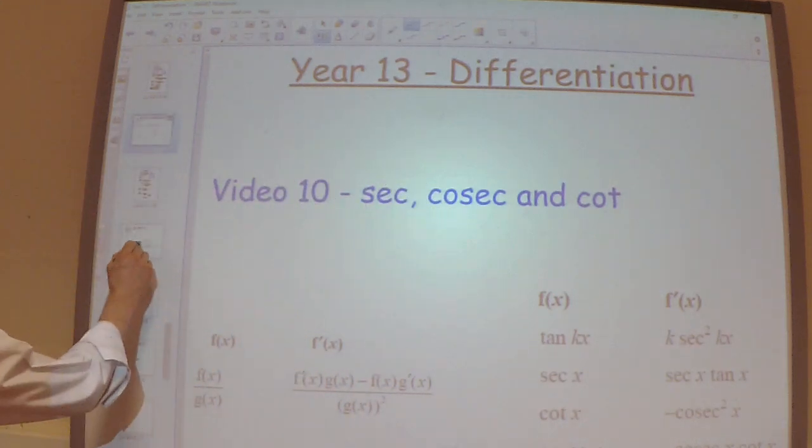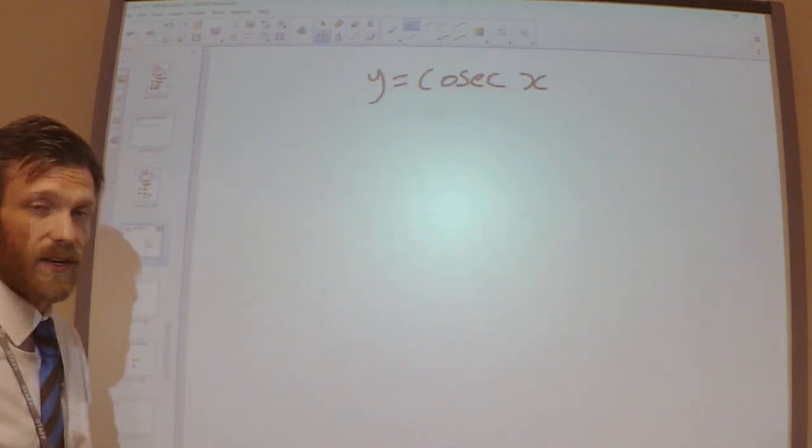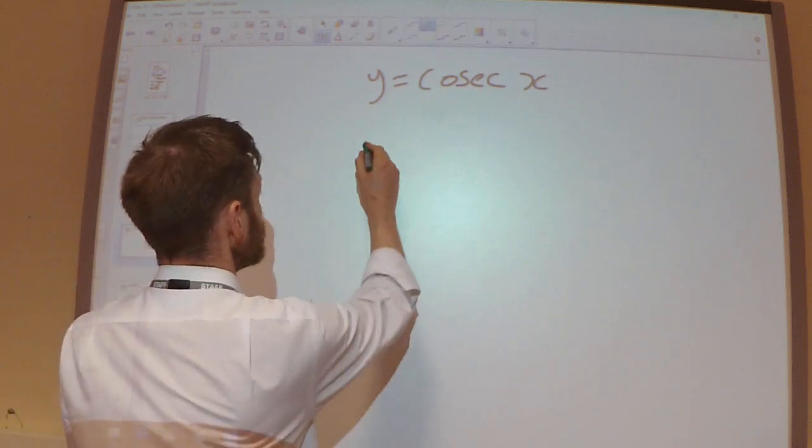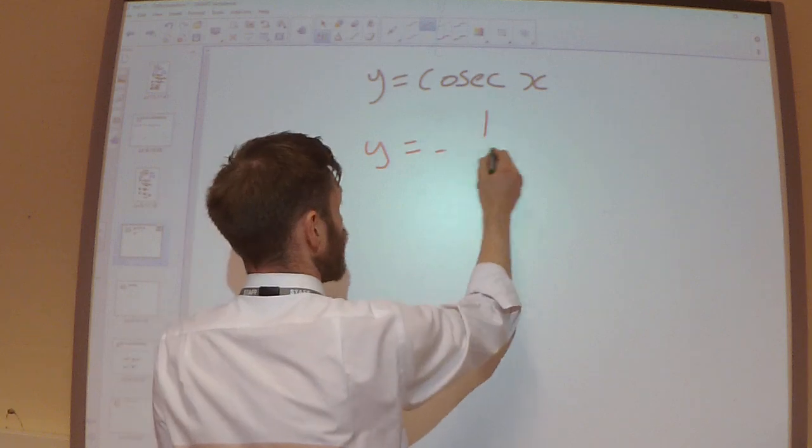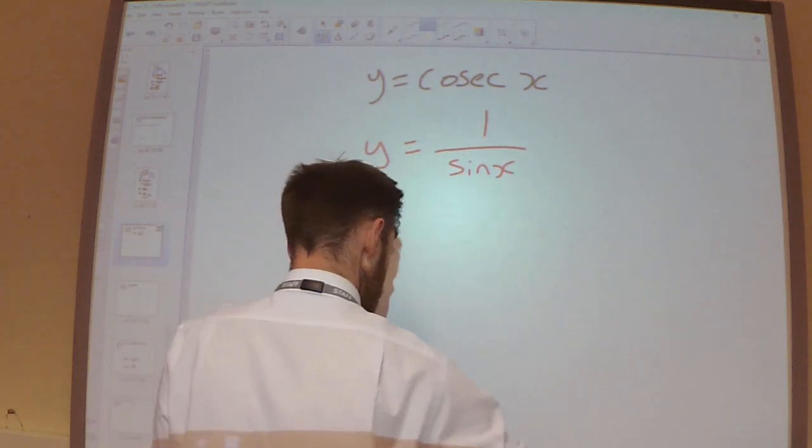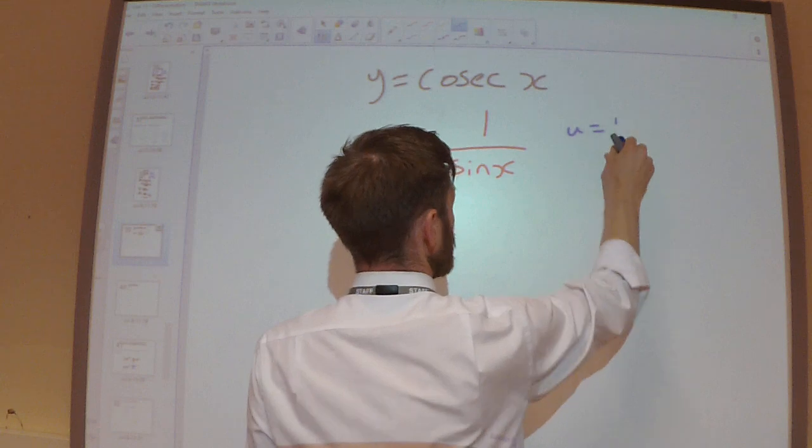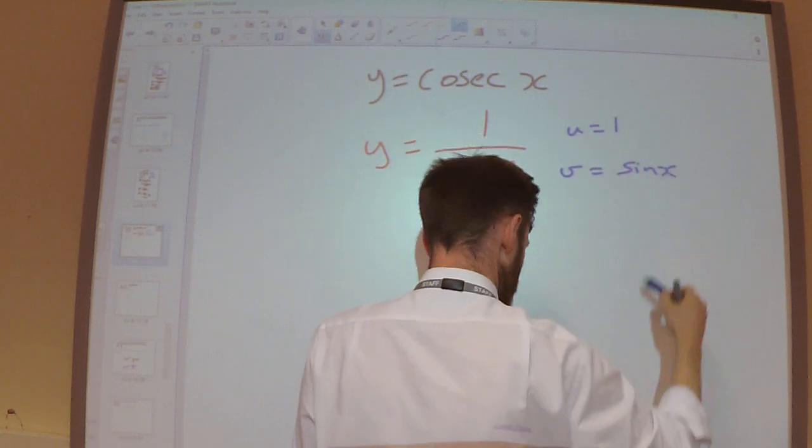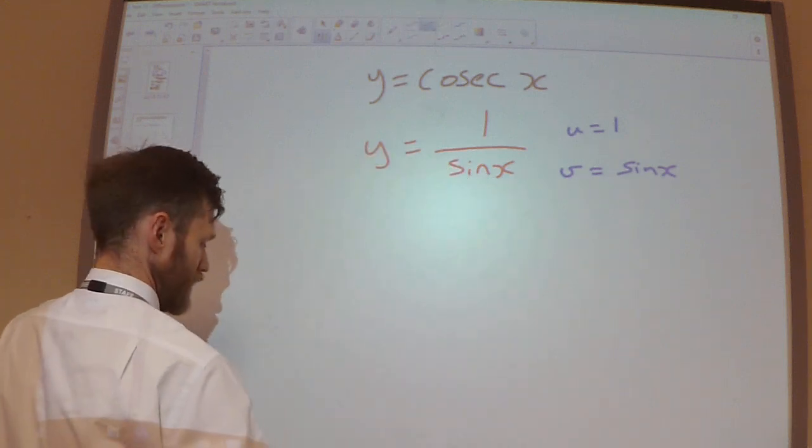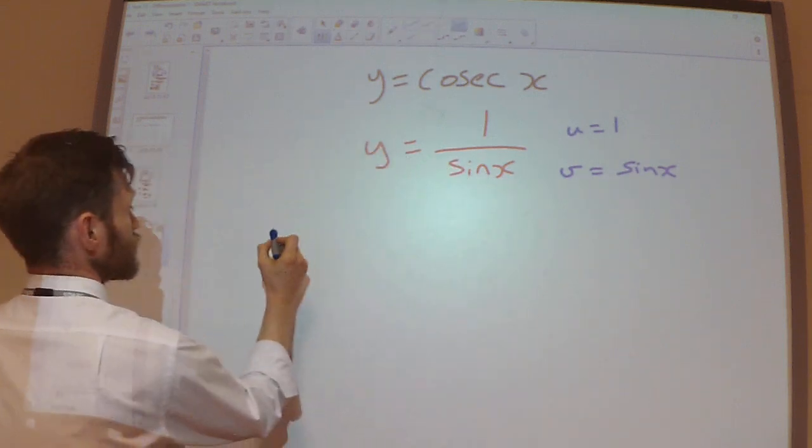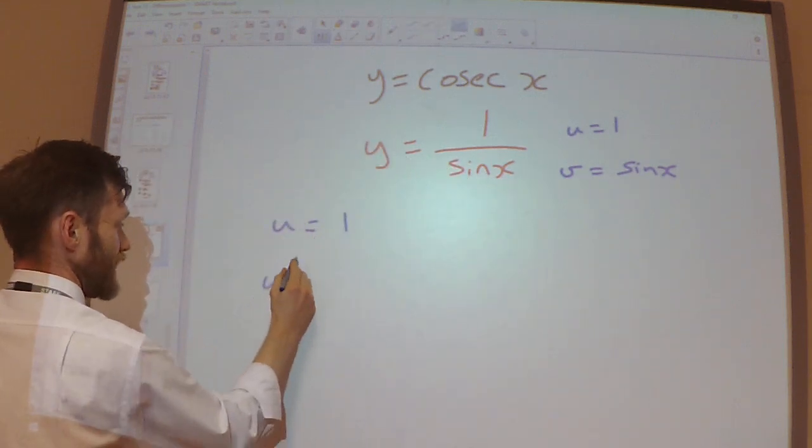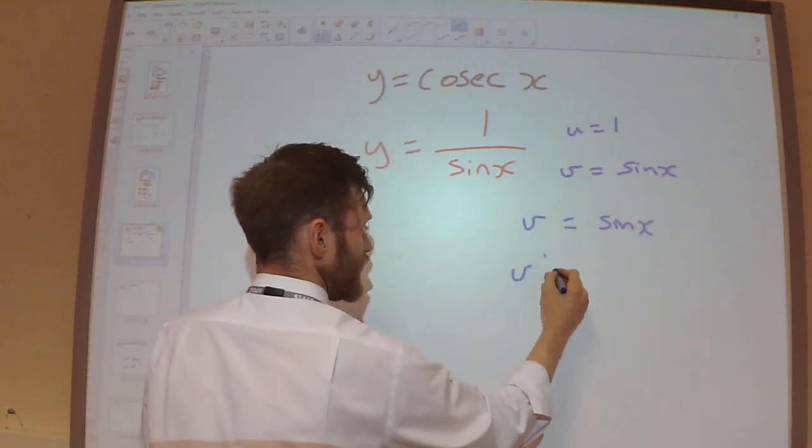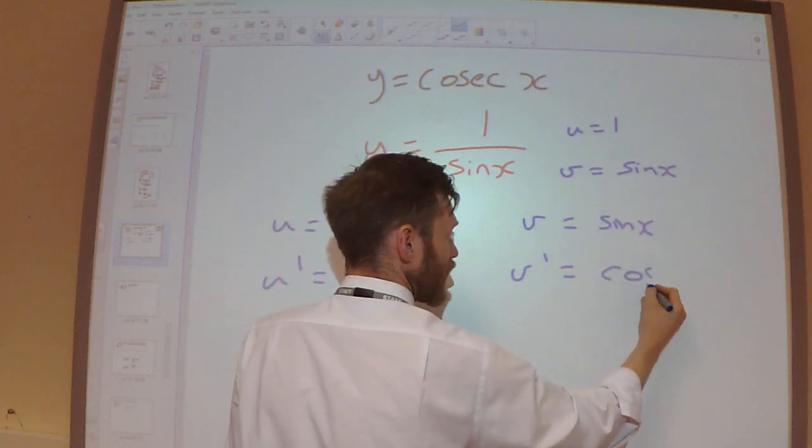And we can do exactly the same thing for the other functions. So cosec x, if I write that as 1 over sine, if I let u be 1 and v be sine x, then I'm going to get u dashed would be 0. v dashed, if I differentiate sine, I get cos.